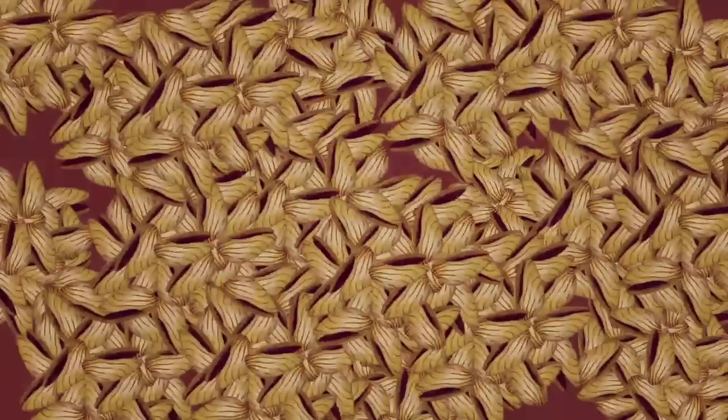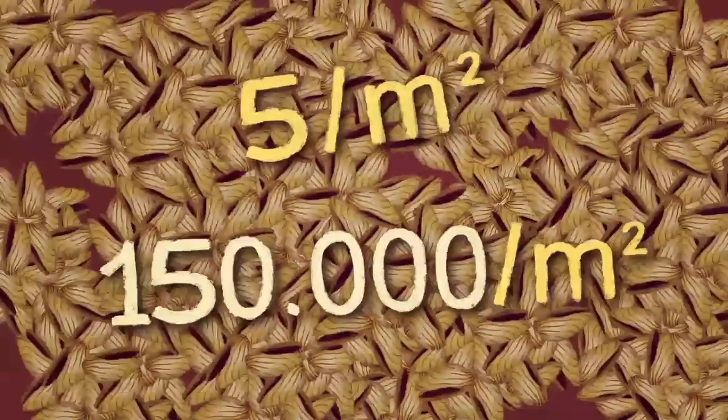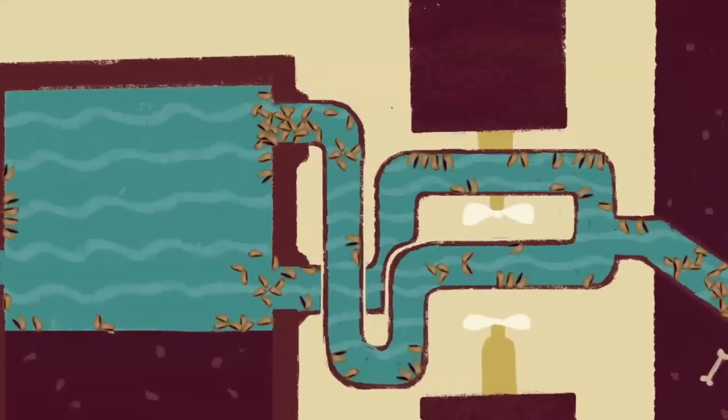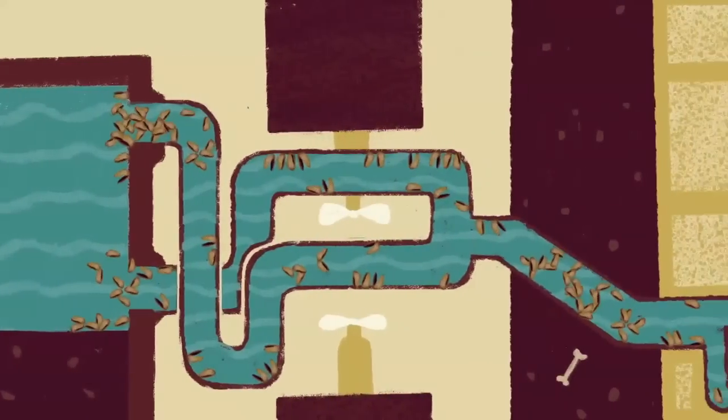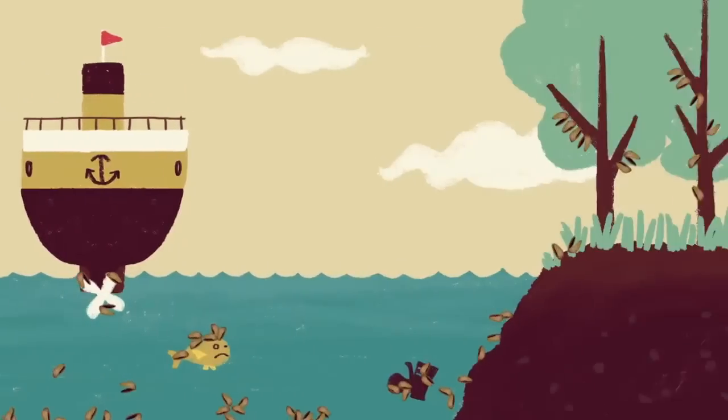In one year, their densities go from 15 mussels per meter square to 150,000 mussels per meter square. Like this, they clog pipelines of power plants attached to ships, hulls, trees and even to other native bivalves.